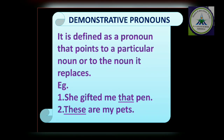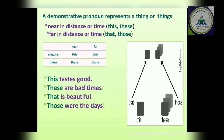Now, demonstrative pronoun — also very easy. It is defined as a pronoun that points to a particular noun or to the noun it replaces. When we are demonstrating or talking about a particular noun, it becomes a demonstrative pronoun. For example: 'She gifted me that pen' — which pen? That pen. The demonstrative pronouns are: this, that, these, those. If an object is near, we use 'this' (singular) and 'these' (plural); if it is farther away, we use 'that' and 'those.'